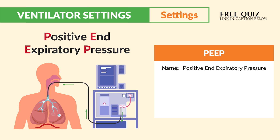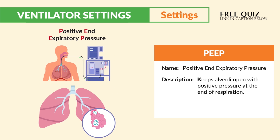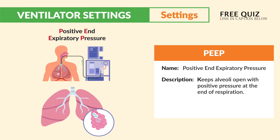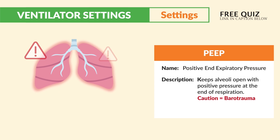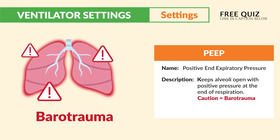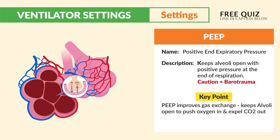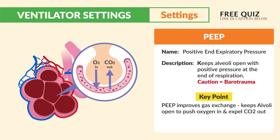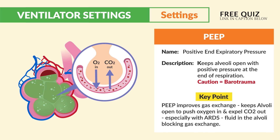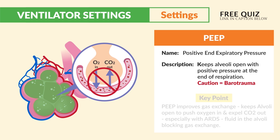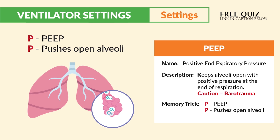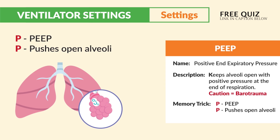Next is PEEP — positive end-expiratory pressure. Focus on this one because the most deadly complications come from this setting. PEEP keeps the alveoli open with positive pressure at the end of expiration. A major caution is barotrauma, which can lead to a popped lung — pneumothorax. PEEP improves gas exchange, keeping the alveoli open to push oxygen in and expel CO2 out, especially with ARDS where fluid fills the alveoli.